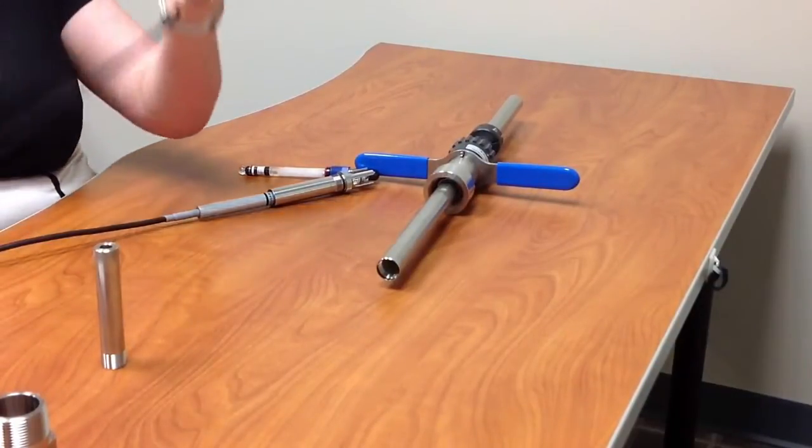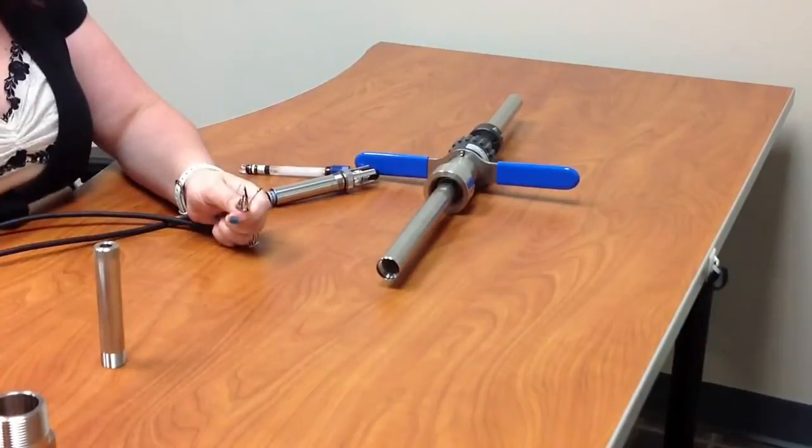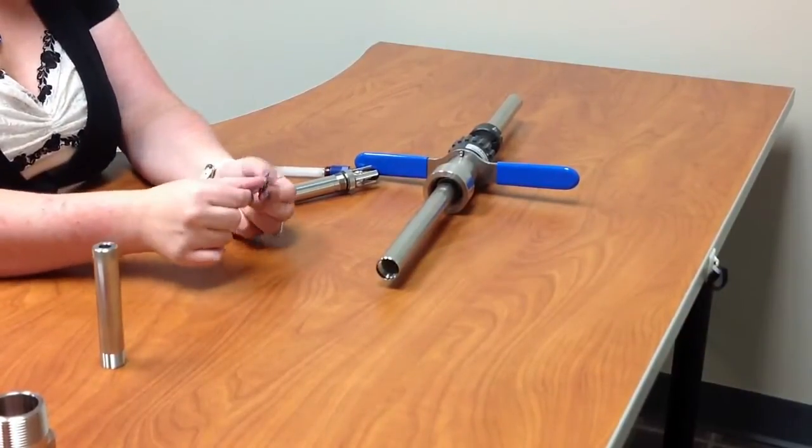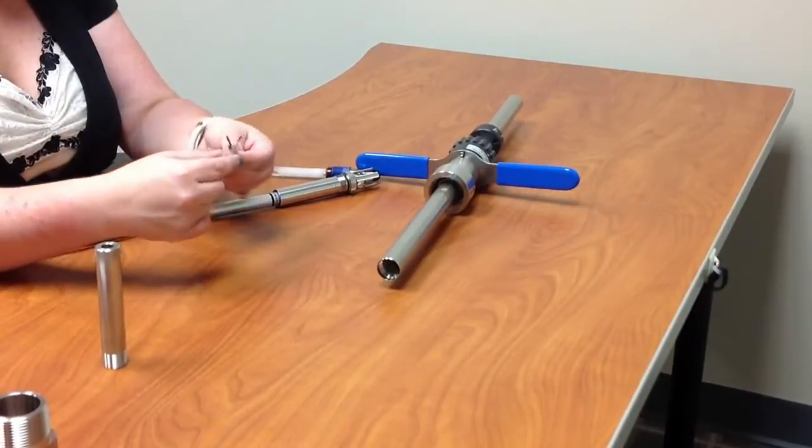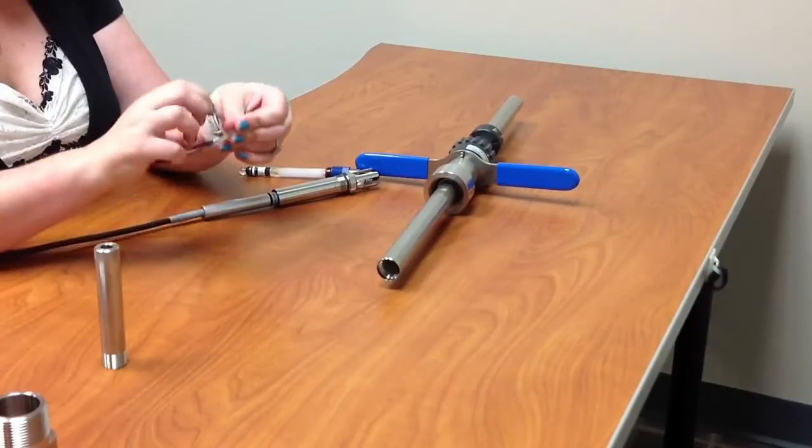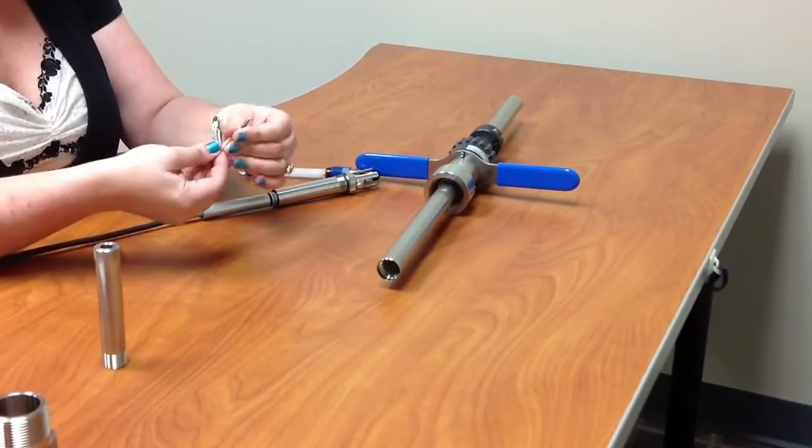You're going to need to take your leads, and just for ease, I have some Scotch tape that I'm using. You just want to tape the leads together to make it one solid lead. It makes it easier for installation.